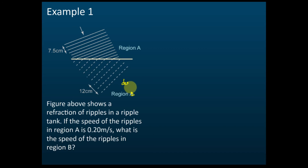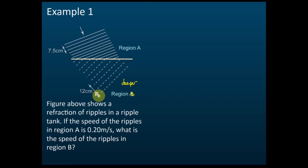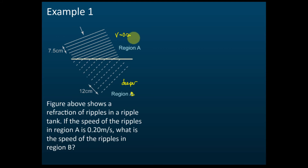They give us the distance of four consecutive wavefronts: 7.5 cm for region A and 12 cm for region B. They ask us to find the speed in region B. The speed in region A is 0.2 m/s, so v equals 0.2 m/s. What is the speed here in region B?